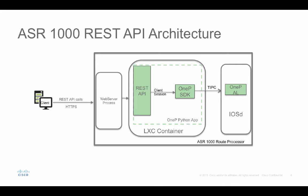REST API is coming to ASR1000, supported in IOS XE Release 3.14 on ASR1000 1x and ASR1000 2x. It's primarily for feature configuration, including VXLAN, LISP, Interface, Routing, ACL, NAT, and many more. It can also be used to gather stats such as CPU and memory usage. It runs in a service container natively on the IOS XE job processor.